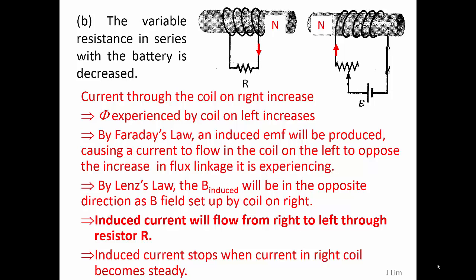By Lenz's law, the induced magnetic flux density will be in the opposite direction as the magnetic field set up by the coil on the right. The induced current will flow from right to left through the resistor R, and stops when the current in the right coil becomes steady.